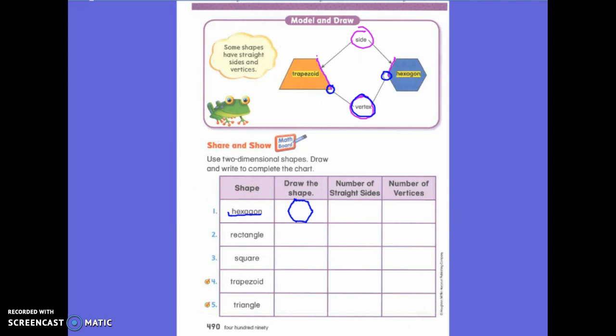How many straight sides does a hexagon have? Six. Six. Because this is a side. This is a side. This is a side. I have six of them. So my answer is six.